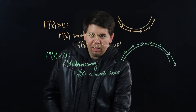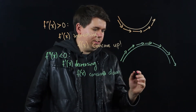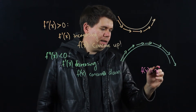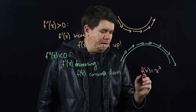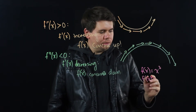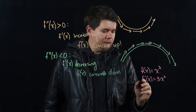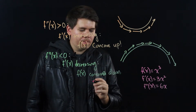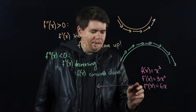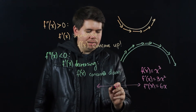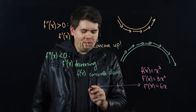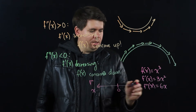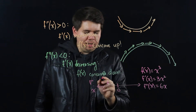Let's look at a quick example. Consider a function like f(x) = x³. Its first derivative by the power rule is 3x², and so its second derivative will be 6x. Think about 6x — if you pick an x value that is smaller than zero, then your second derivative will come out to be a negative number.